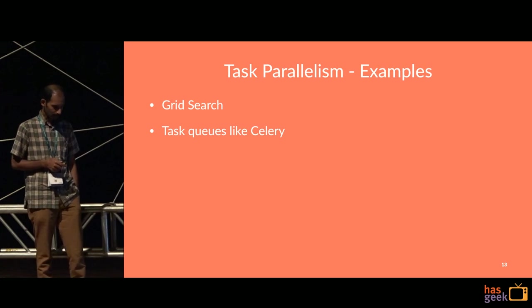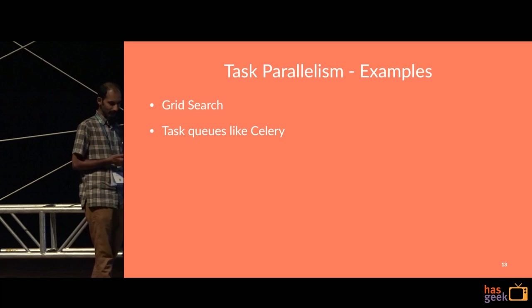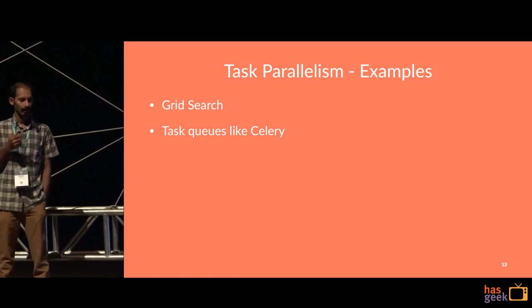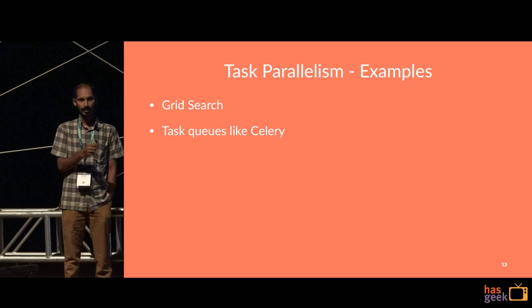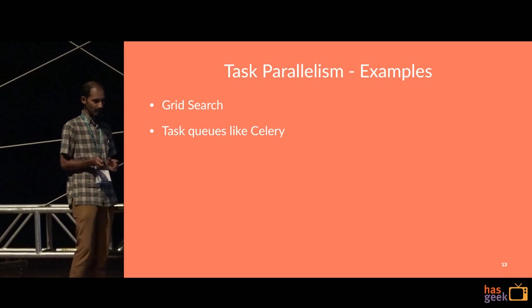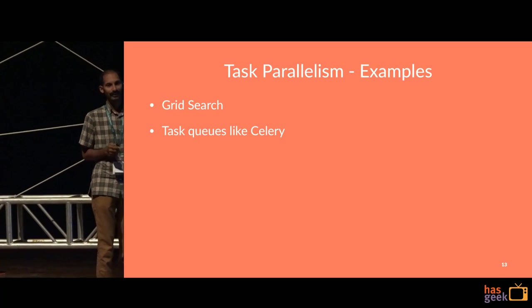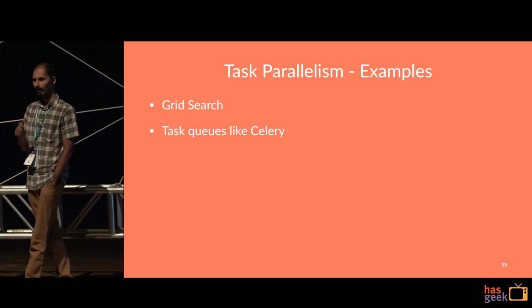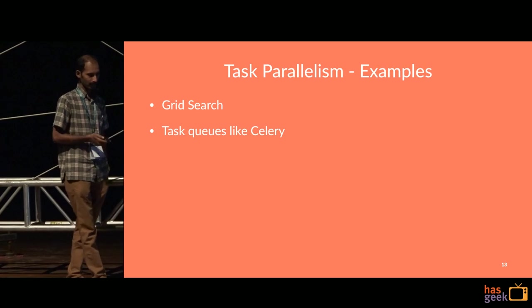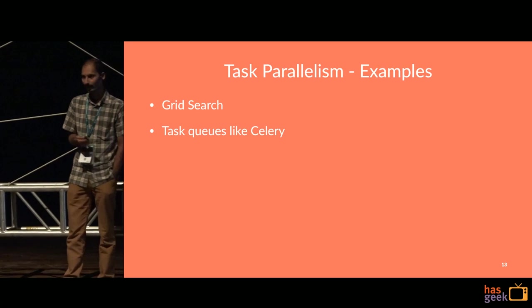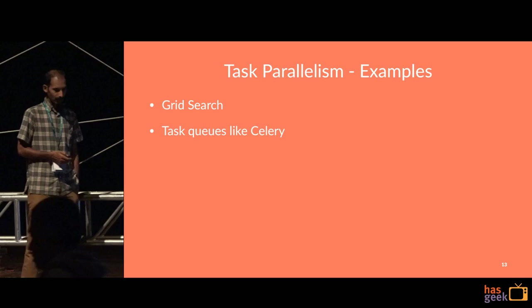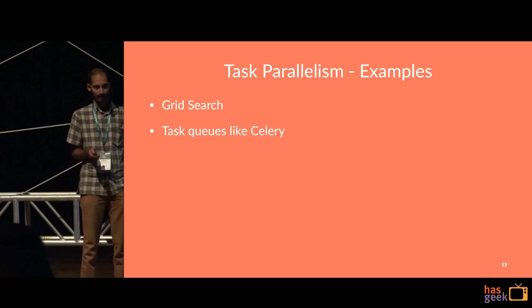Data parallelism is usually very fine-grained — you have very small micro-tasks. Task parallelism tasks are usually bigger. In the task parallelism case, you have tasks with much larger granularity, like training numbers.